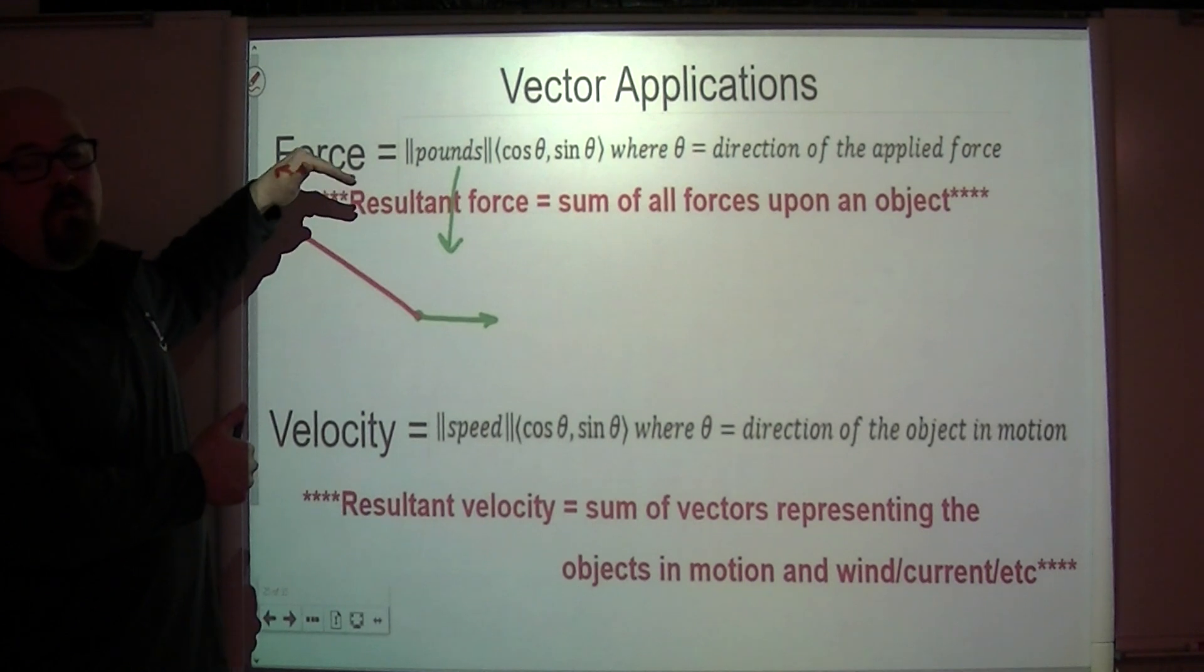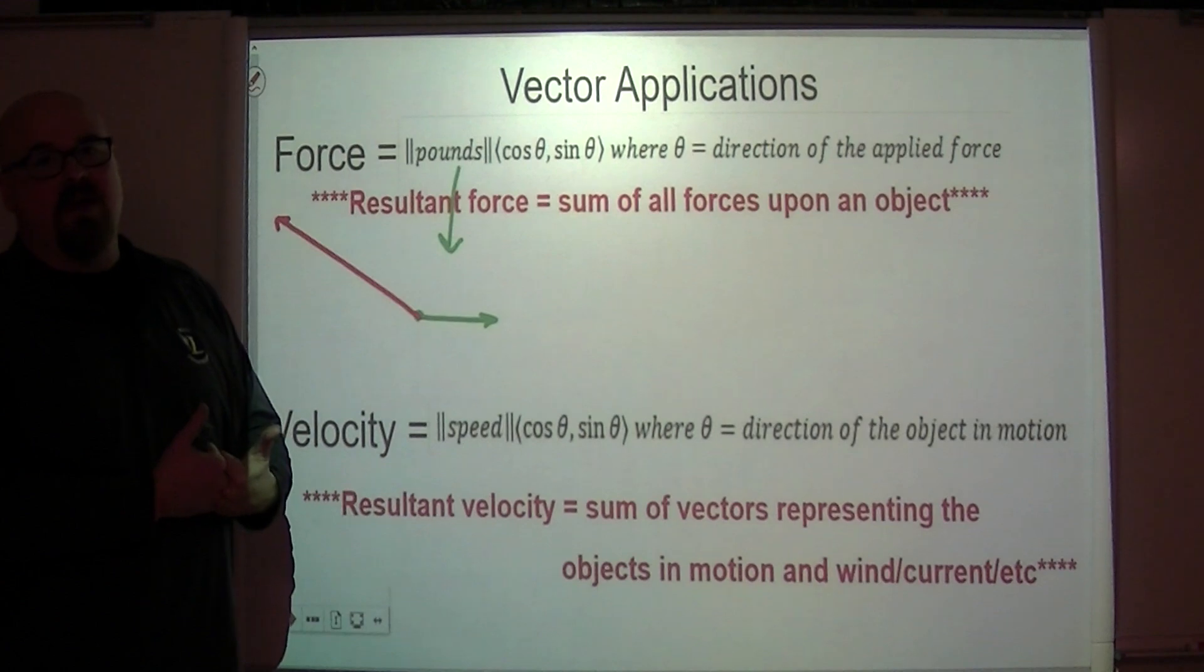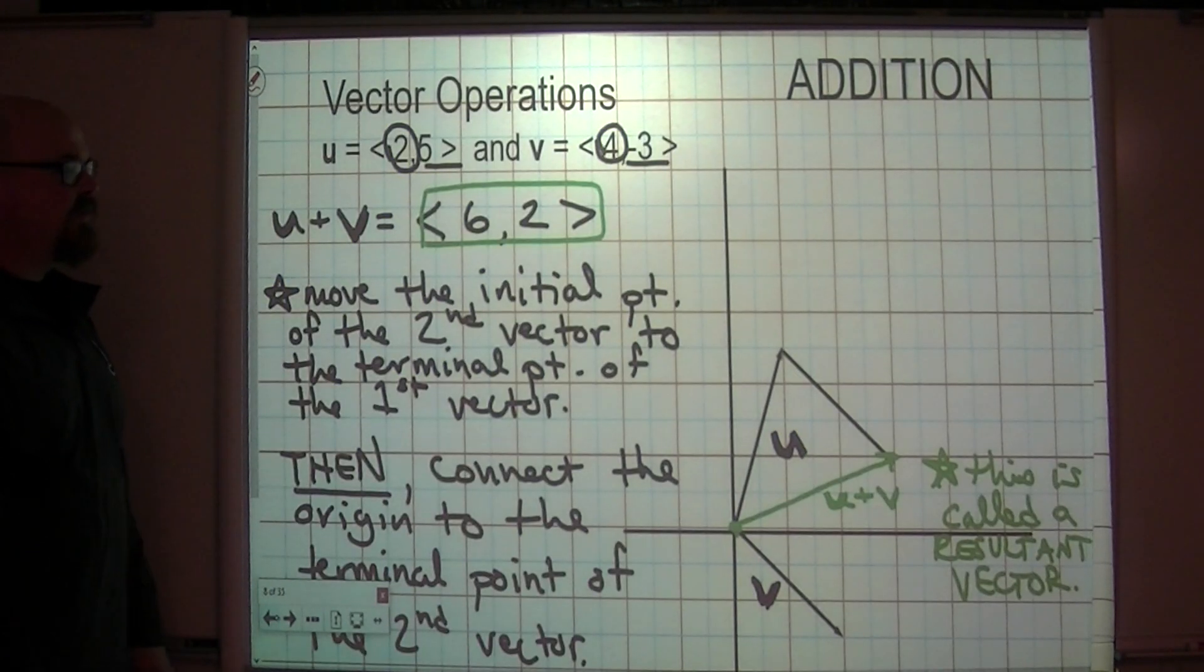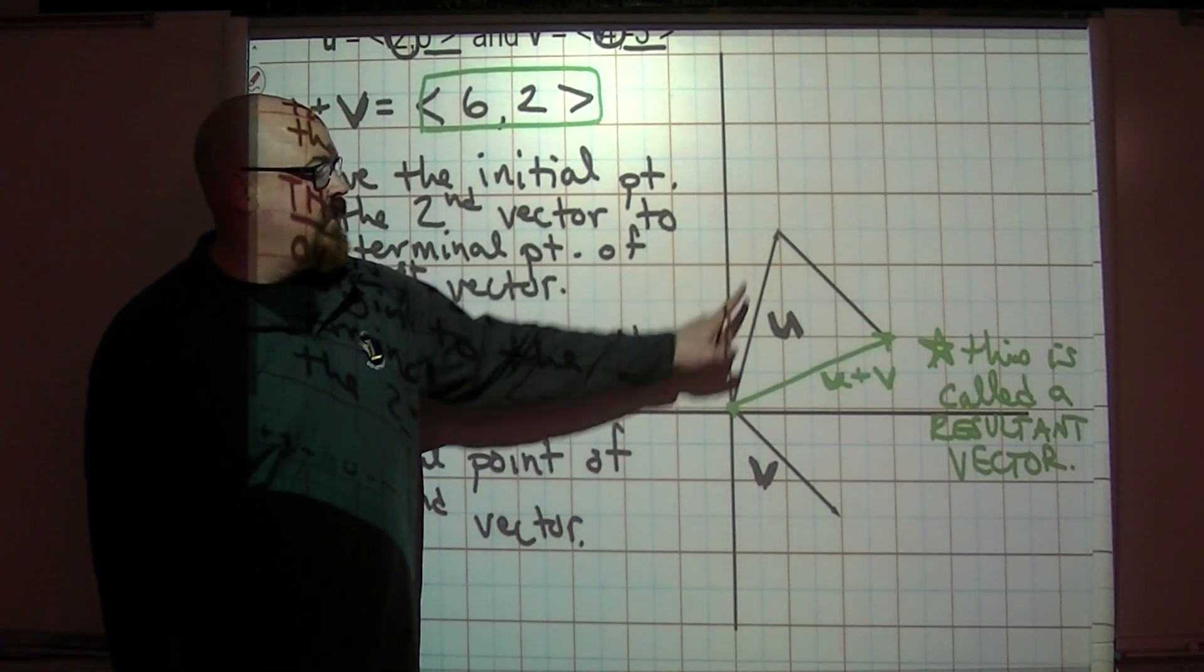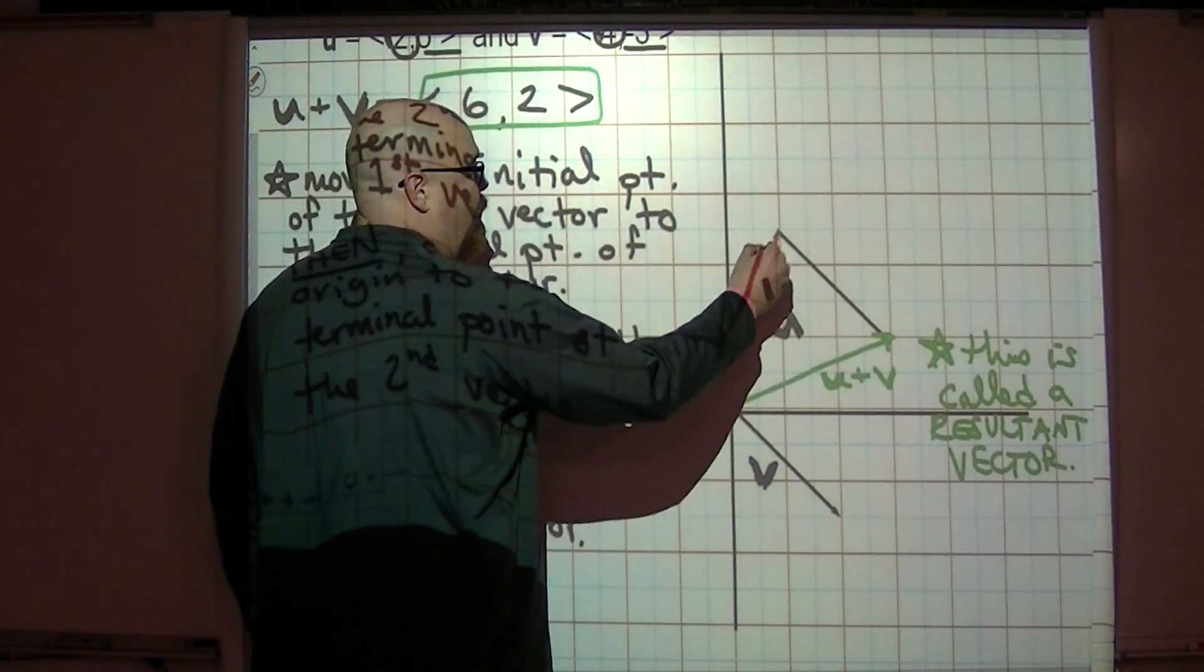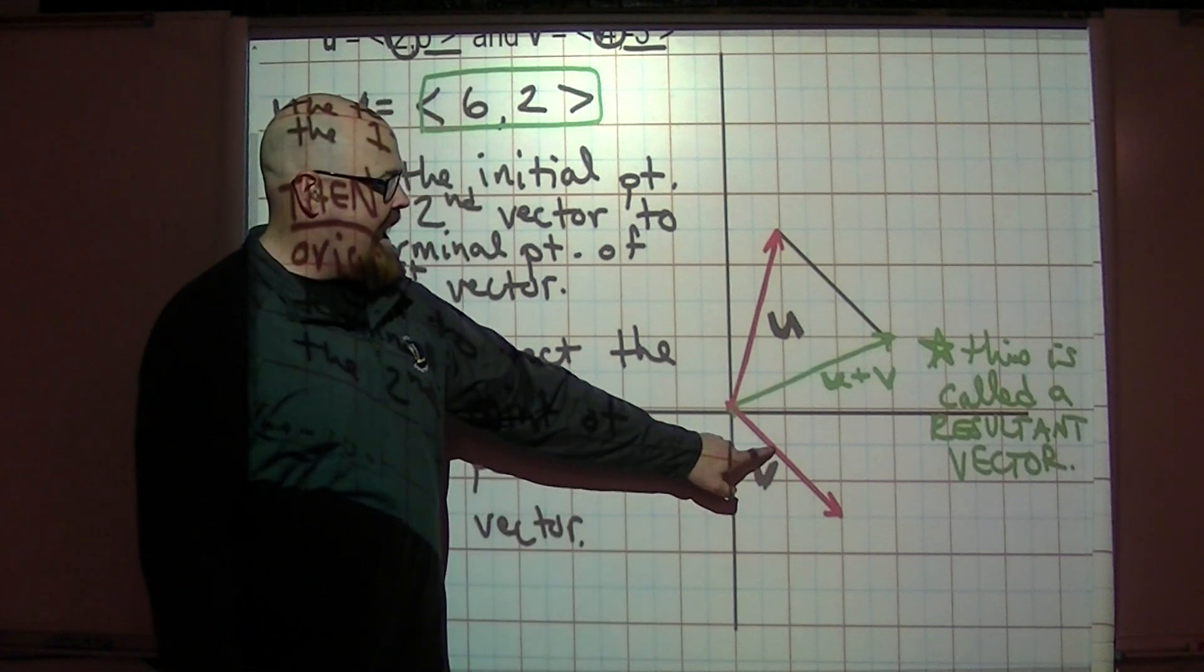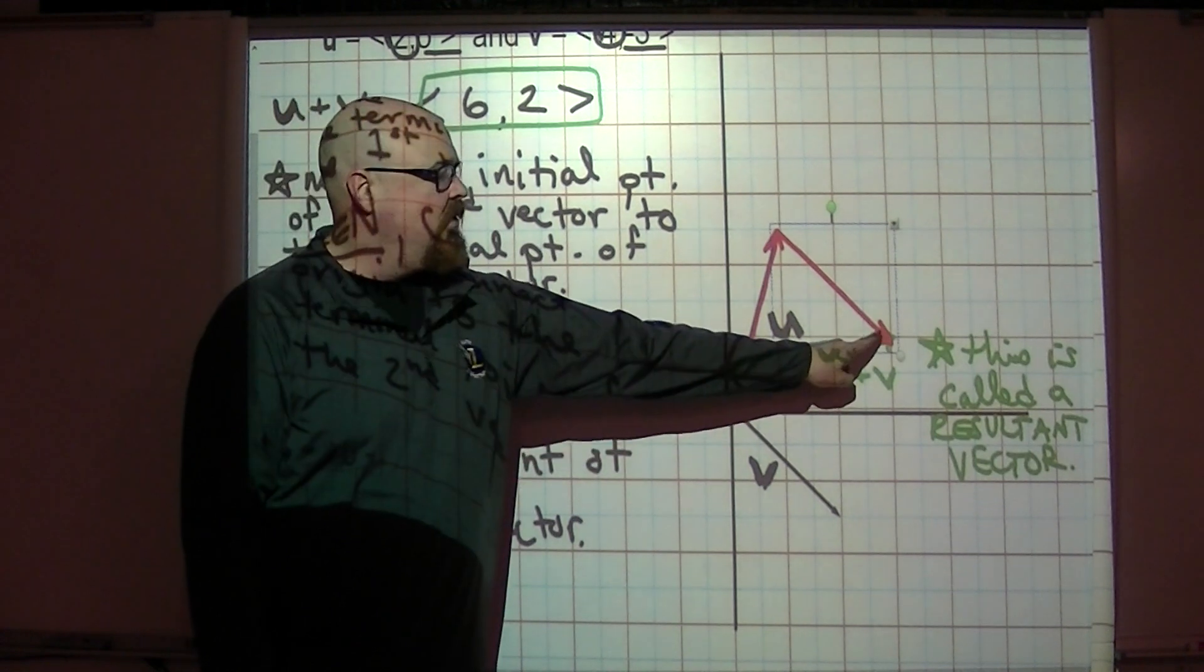You're going to hear the word resultant force a lot. Resultant force is the sum of all forces upon an object. So we talked about resultant vectors when we were doing this before. Just as a review, let's go back. You should have notes on this stuff already. We talked about resultant vectors, and how if you have an object going, or relate this to what we're talking about now in terms of force. If you have an object being pulled in this direction, and you have that same object being pulled in that direction, if you add these two forces like we did at the time, then the object is going to move in this direction.